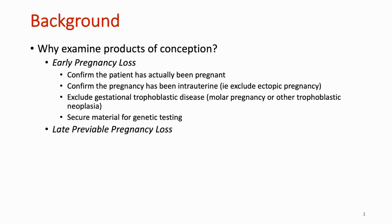For early pregnancy loss, which we can define as that occurring before 14 weeks gestation or first trimester losses, pathologic examination may or may not clue in on an exact cause for the demise, but it's important for several reasons. This includes to confirm that the patient has actually been pregnant, also to confirm that the pregnancy has been intrauterine — to exclude an ectopic pregnancy. We also want to exclude gestational trophoblastic disease, which would include molar pregnancies. And also, if applicable, this is our chance to secure material for genetic testing.